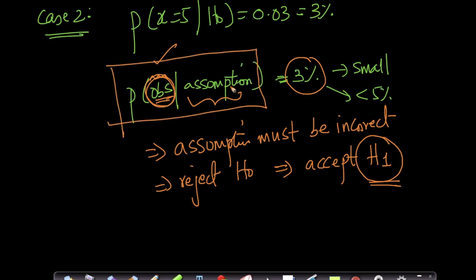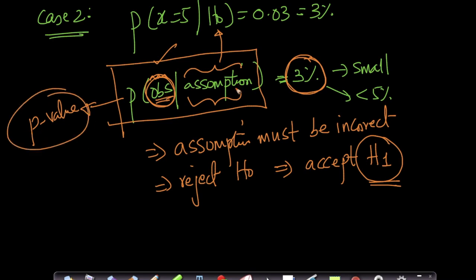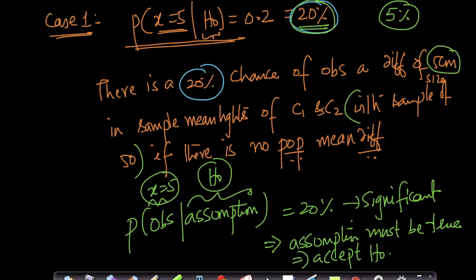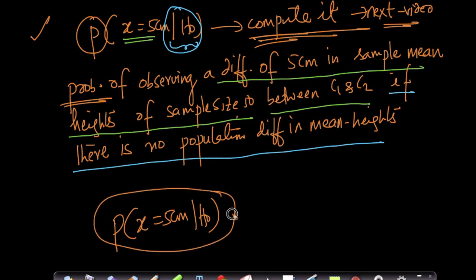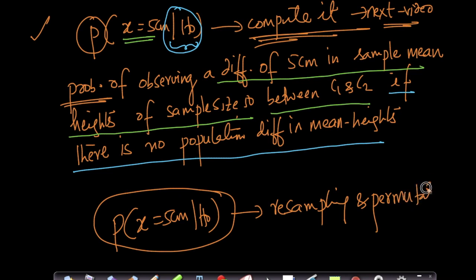The alternative hypothesis here is that the population means are not the same. It is very useful to think of hypothesis testing from this framework: probability of an observation given an assumption. Since the observation is something you've already seen, it cannot be incorrect — your assumption may be correct or incorrect. This probability is your p-value. If the p-value is less than 5%, reject the null. In the next video we'll see how to compute these probabilities using resampling and permutation testing.